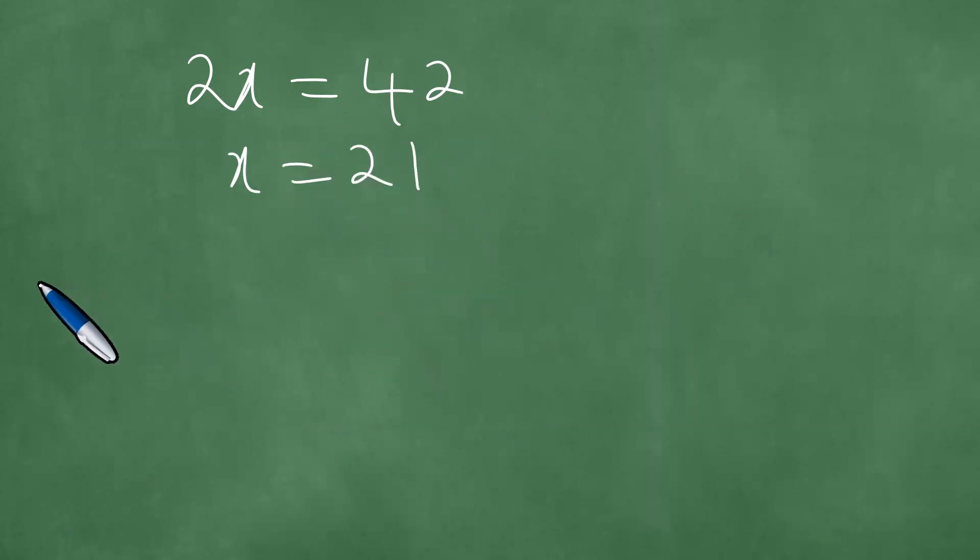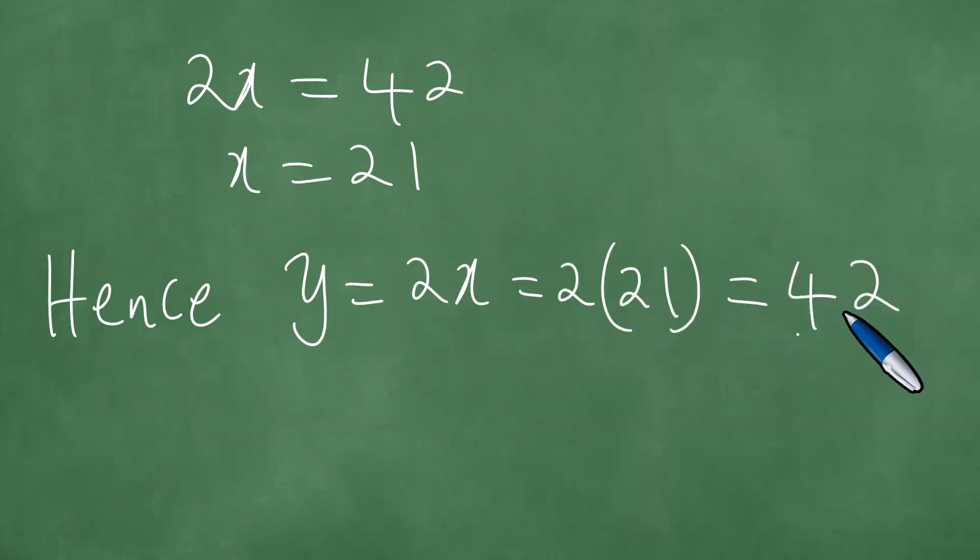If x is 21, hence y is equal to 2x. x is 21. And this is 42.